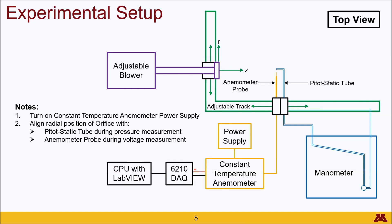Some notes about this: you need to turn on the constant temperature anemometer power supply, and you want to make sure to align the orifice from the adjustable blower into two different positions — one in front of the pitot-static tube and then the other in front of the anemometer probe. This will happen during the calibration process, so make sure you go back and forth between the two.